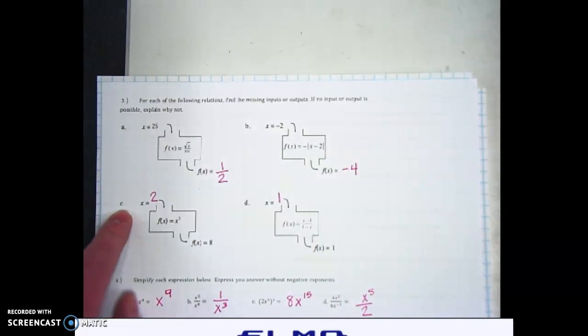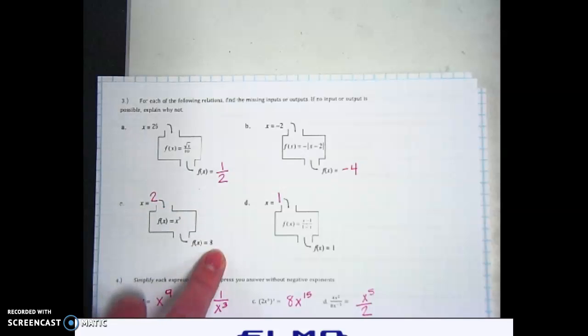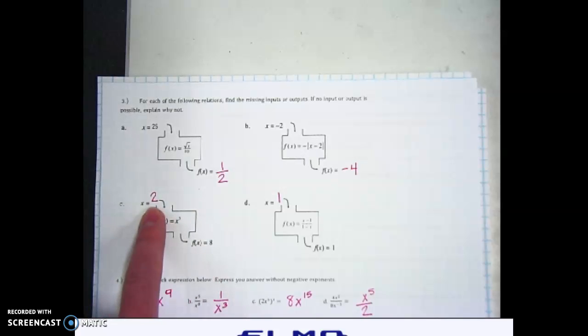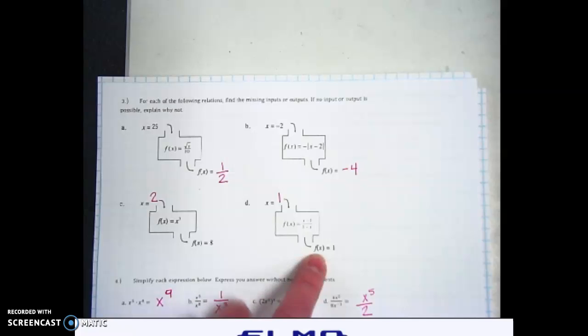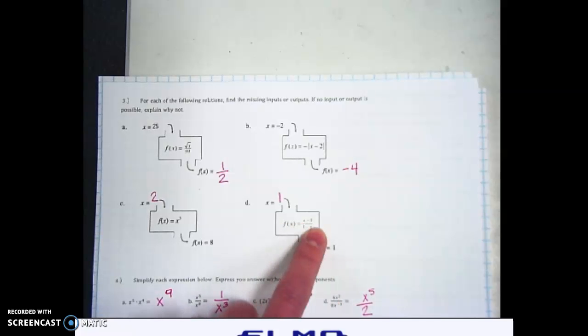Part C, what number can we plug in here to get out a result of 8? So what number cubed is 8? And that would be 2, because 2 times 2 times 2 is 8. And then part D, what number can we plug in to get a 1? 1 minus 1 is 0, and 1 minus 1 is 0. So 0 over 0 is 1.